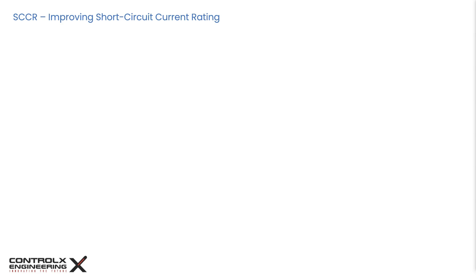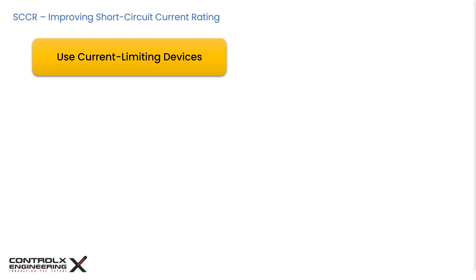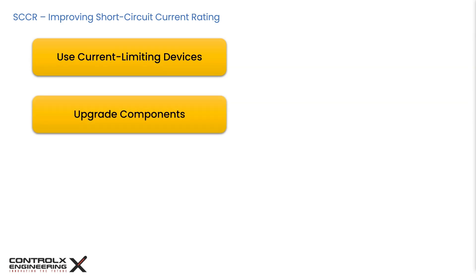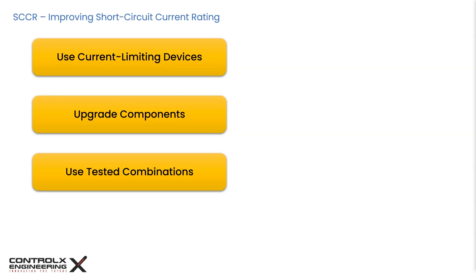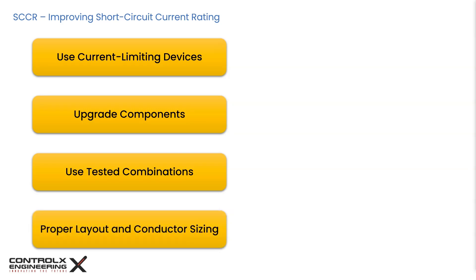There are several techniques to improve SCCR ratings. First, use current limiting devices — adding current limiting fuses or circuit breakers can reduce the fault current reaching downstream components, interrupting fault current in less than half a cycle. Second, upgrade components by replacing low-rated components with ones that have higher SCCR ratings. Third, use tested combinations — manufacturers sometimes provide tested combinations of components with a higher combined SCCR than individual parts, as seen in example two. Finally, proper layout and conductor sizing matters: minimizing conductor length and ensuring proper sizing reduces impedance, helping manage fault currents.